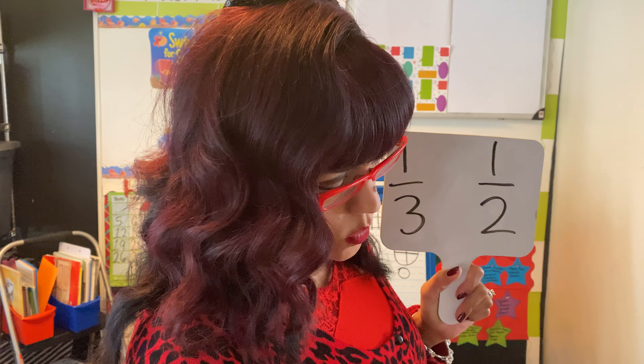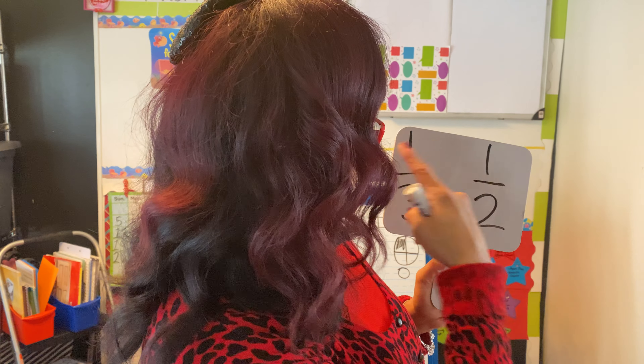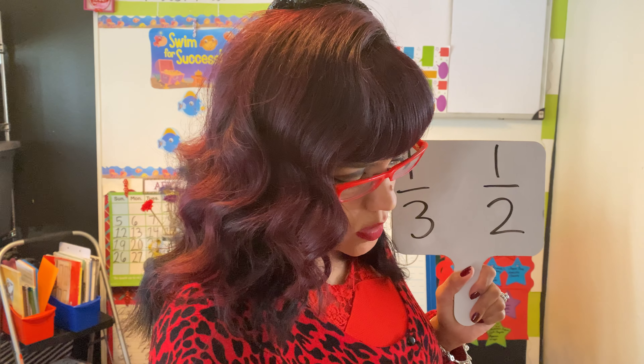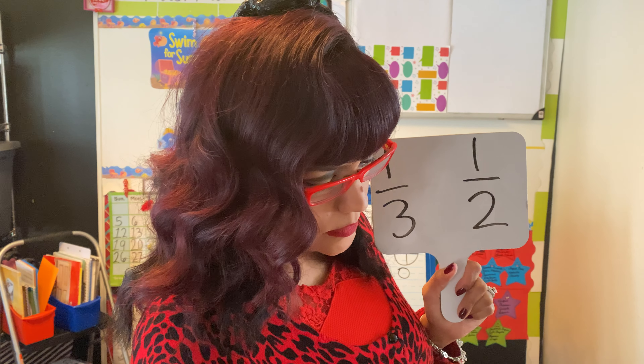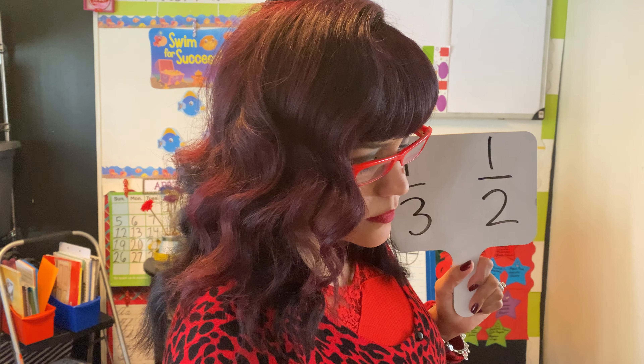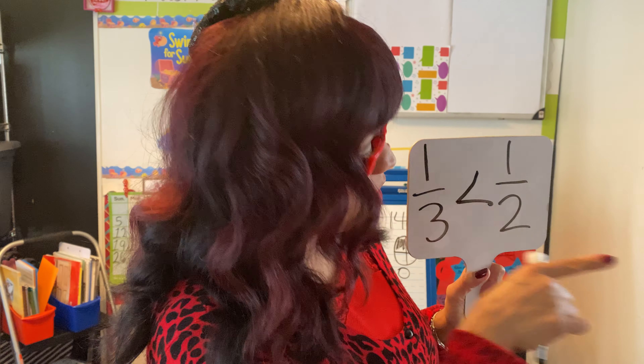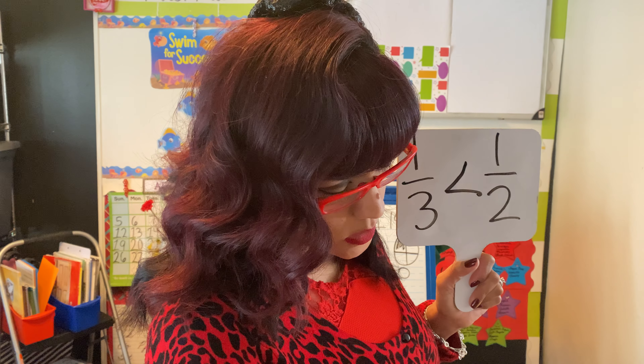You have one-third and then one-half being compared. Now, what direction, class, do you think your sign should be facing? Is it going to be greater than or less than? Which one is largest out of these two? The answer is your one-half — make sure your sign is facing that way.